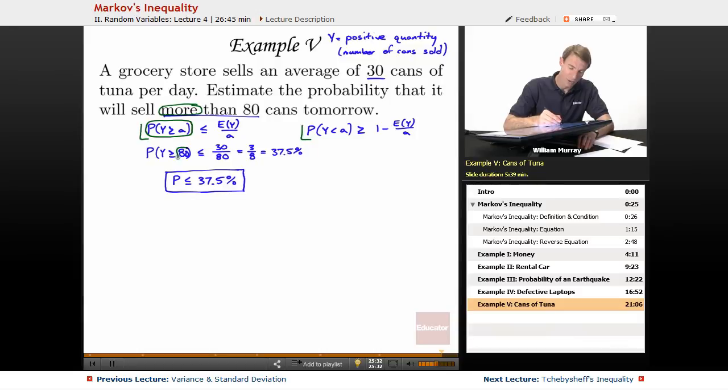So, I filled that in with a equals 80 in the denominator here. And then, E(y), that's the average number of cans sold, so that's the 30 from the problem. That simplifies down to 3 eighths, 37.5%. What Markov's inequality tells us is that the probability is less than or equal to 37.5%. That less than or equal to is really an important part of your answer. You're giving an upper bound.